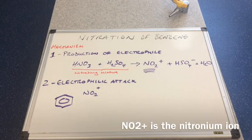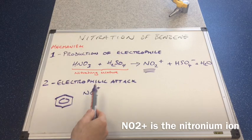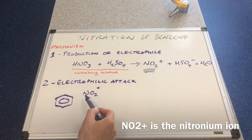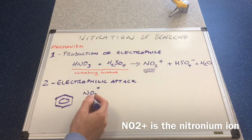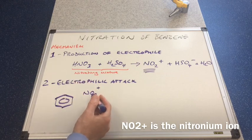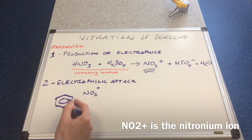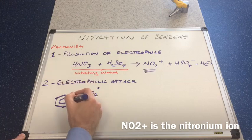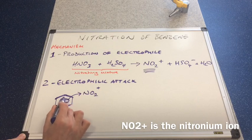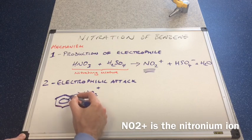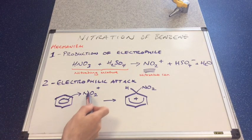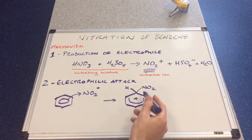The second part of the mechanism is known as the electrophilic attack. The whole point of that first equation is to produce the electrophile. Here it is, this is known as the nitronium ion. Basically this is going to accept a pair of electrons from the delocalized electron cloud. We show that in the mechanism as a curly arrow from the circle, the inner circle here, the pi electron cloud. A pair of electrons will come out and bond with this nitrogen.